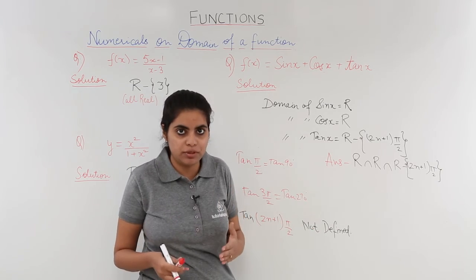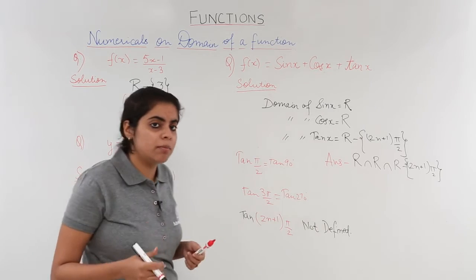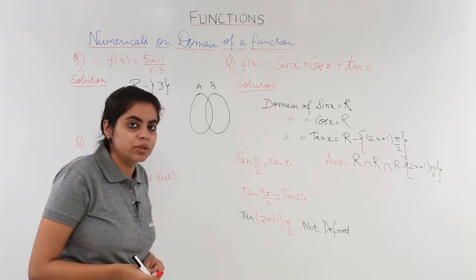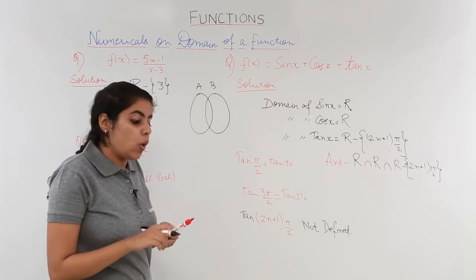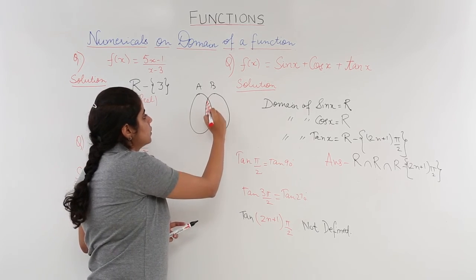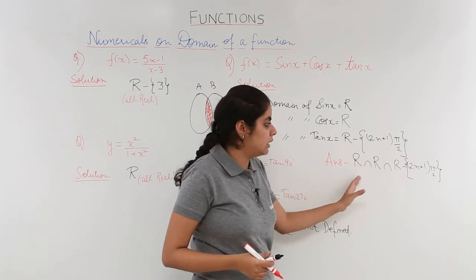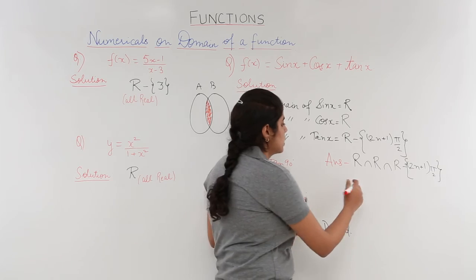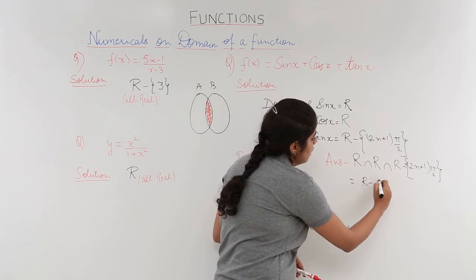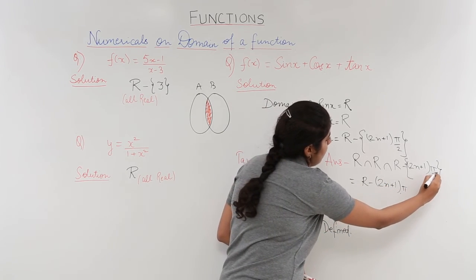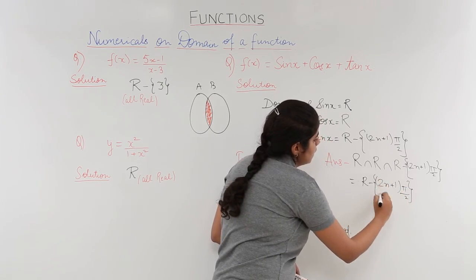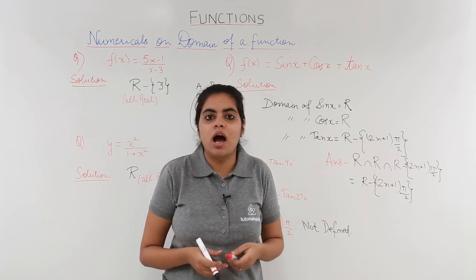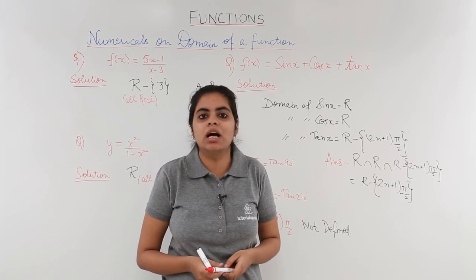Recall that intersection means the common part — like the overlapping region in a Venn diagram of sets A and B. For our three sets, the intersection is the common region, which is R minus the odd multiples of π/2, written as R \ {(2n+1)·π/2}. Hence the domain of sin(x) + cos(x) + tan(x) is all real numbers minus the odd multiples of π/2. In the next video we will see how to find the range of a function.